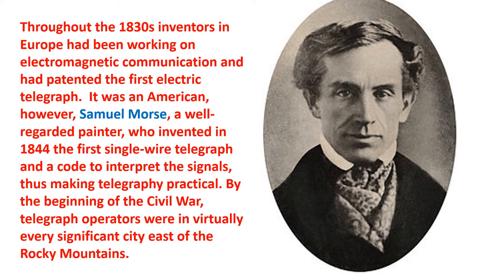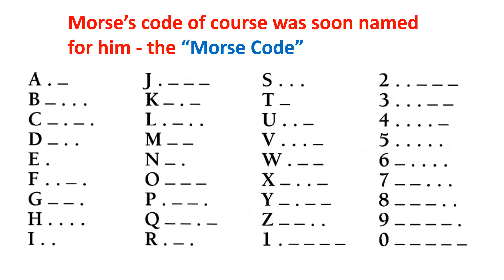By the beginning of the Civil War, telegraph operators were in virtually every significant city east of the Rocky Mountains. Morse's code was soon named for him, the Morse code, and you can see the letters and the dots and dashes that he used.